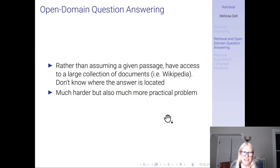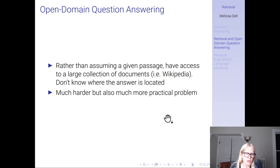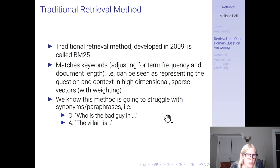This part of the lecture is about open domain question answering. As we just saw with reading comprehension, we have a question and a passage and we want to find the span of text in that passage that answers the question. But in reality, the main application of question answering is that we have a very large collection of documents like Wikipedia and we don't know where the answer is located. So we want to find the document in this massive collection that answers our question. Breaking this problem down, we need a retriever to pull out a predefined number of passages which may contain the answer, and then we need a reader — like the reading comprehension model we just learned — to apply to those passages to pull out the answer.